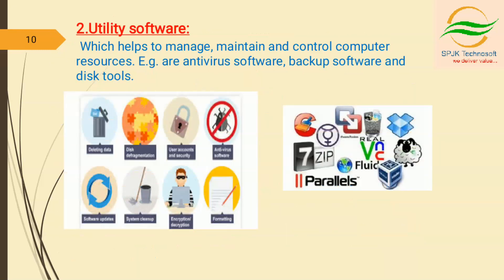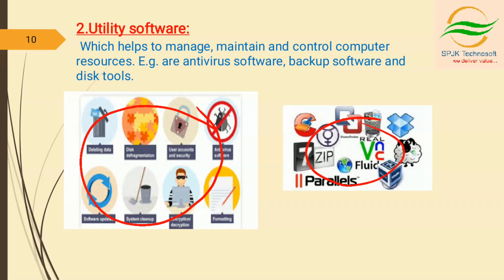Utility software is one of the system software. Utility software performs specific tasks, usually related to managing a computer, its devices, or its programs. These are utility programs: deleting data, data defragmentation, user security, antivirus, software updaters, system cleanup, encryption and decryption, and formatting. These programs assist in the smooth functionalities of the computer system and help it to perform better. Some utilities help you to avoid virus attacks.